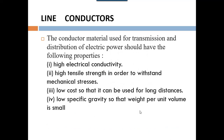The major properties of a conductor are: number one, high electrical conductivity; number two, high tensile strength in order to withstand mechanical stress; number three, low cost so that it can be used for long distances; number four, low specific gravity so that the weight per unit volume is small. These are the four parameters to consider when selecting a conductor.